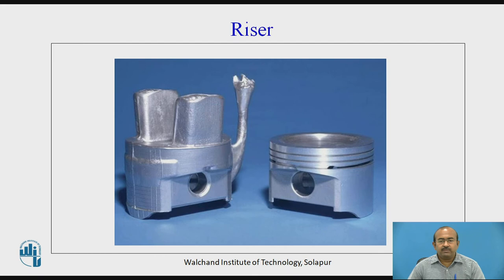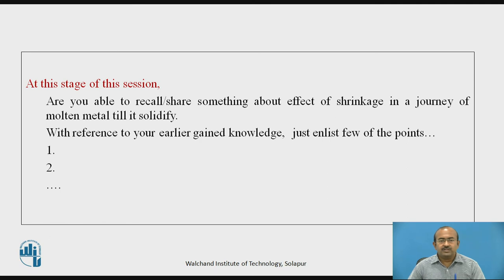This real-time image elaborates on the visualization of a riser present in a casted element. The left side shows a solidified element taken out from the mold box, and after finishing, the ready part is shown on the right side of the image. At this stage, are you able to recall and share some effects of shrinkage in the journey of molten metal until it solidifies? With reference to your earlier gained knowledge, just enlist a few points.